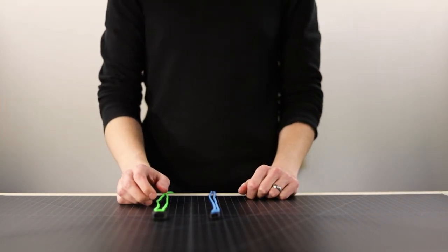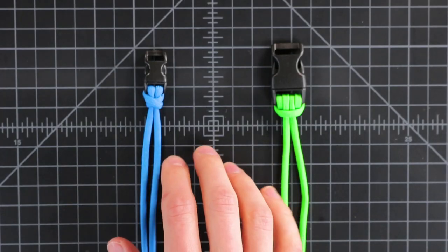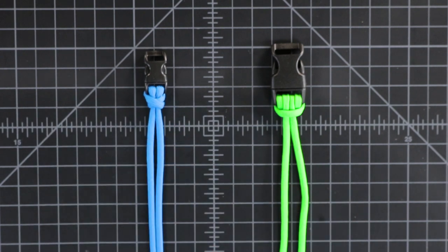Welcome back guys. Today we've got a knot tutorial. We're going to be going over alternatives to the cow's hitch or lark's head knot for attaching paracord to bracelet buckles.